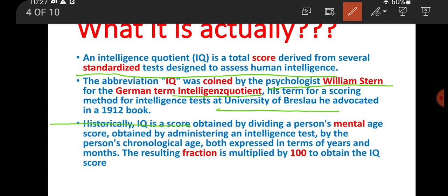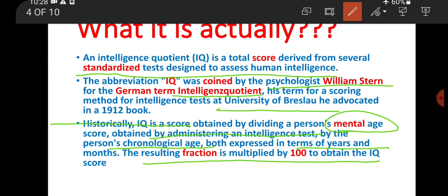How can we explain the IQ score? We need to understand mental age. Mental age is the age-equivalent level of ability — for example, the ability we expect a 6-year-old child to perform at. We assess mental age by administering a standardized intelligence test, then divide it by the chronological age, which is the actual birth age, expressed in years.